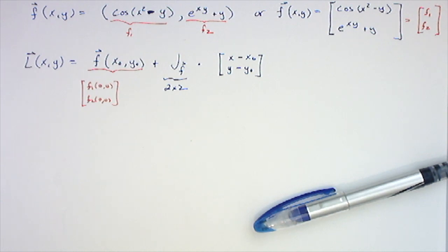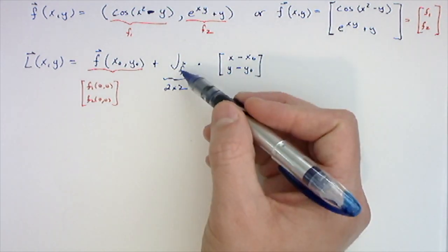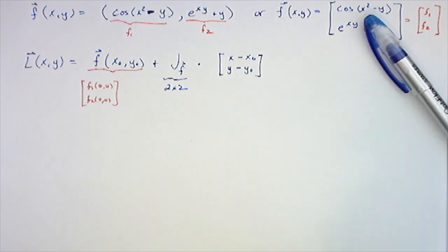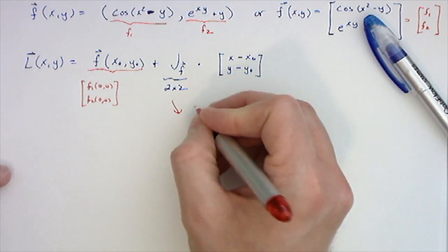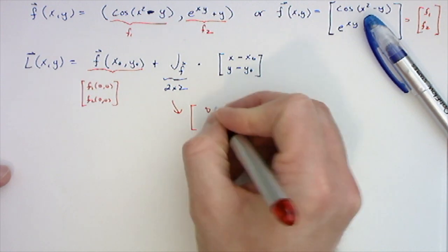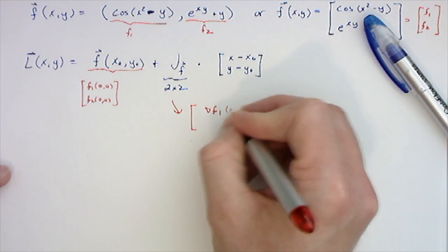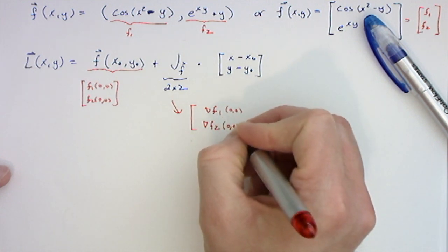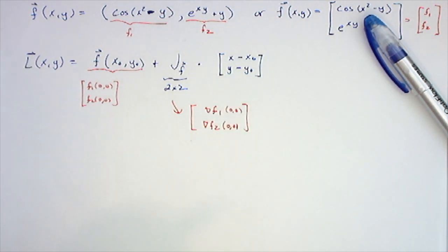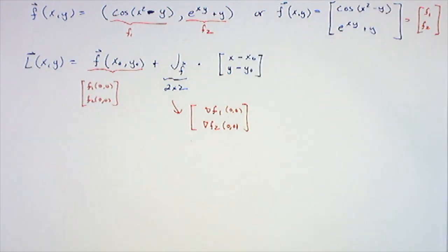The first row of this 2×2 matrix is going to be the gradient of the first function, so it's the gradient of f1 evaluated at (0,0). Then the second row is going to be the gradient of f2 evaluated at (0,0).